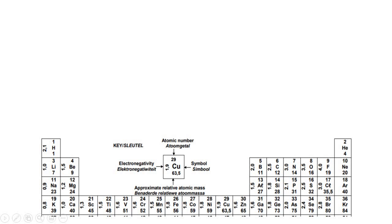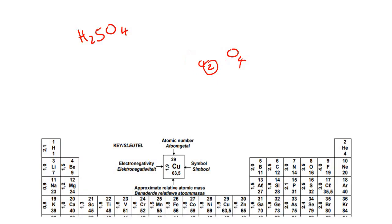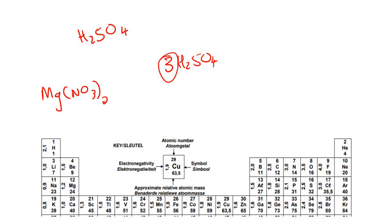Hey guys, hope you're well. This lesson is going to be amazing. We're going to be looking at some super important stuff. For example, if I give you something like H₂SO₄, we're going to learn how to calculate the mass on the periodic table. We're also going to learn how to work with things like what does that 2 do, or what if we have a 3 in the front, or what if we have a 2 on the outside? How do you calculate the mass of that? That's the type of things we're going to be looking at in this lesson.